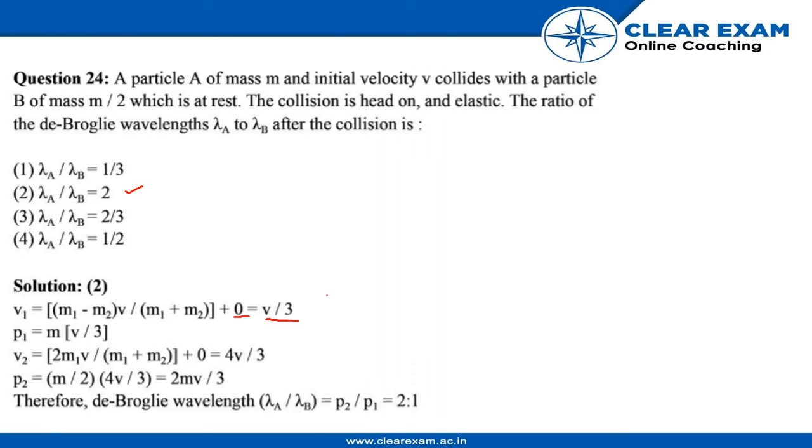Now from this we can get the elastic collision that is mv. So for the particular, before collision it's v by 3. So for the collision we get v by 3. So it would be m into v by 3.